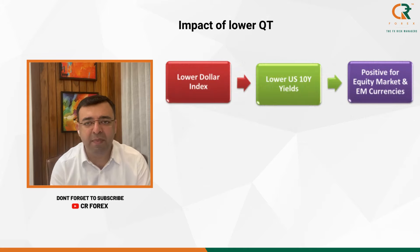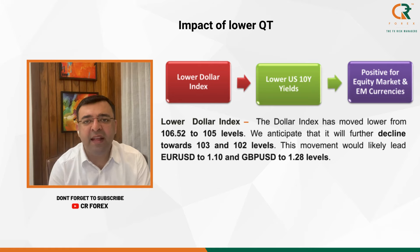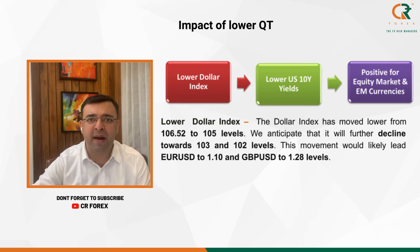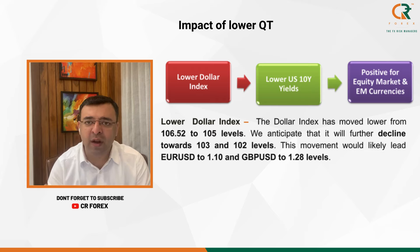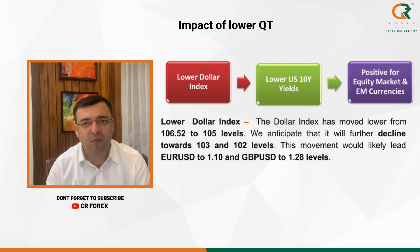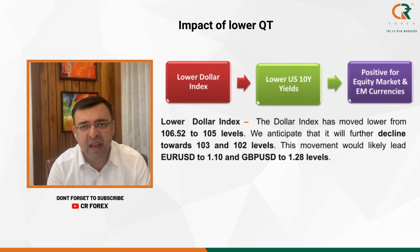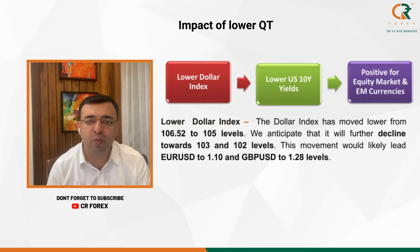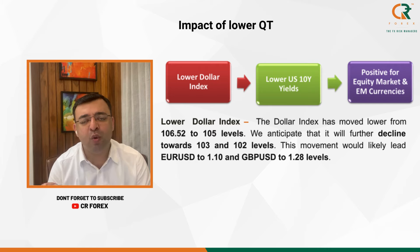The first impact is that the dollar index and 10-year yield will come down due to increased dollar supply from lower QT. That is the reason why the dollar index has come down from 106.5 to around 105. We are further expecting it to move towards 103 and 102. If that happens, EUR/USD is going to move towards 1.10 and GBP/USD towards 1.28.